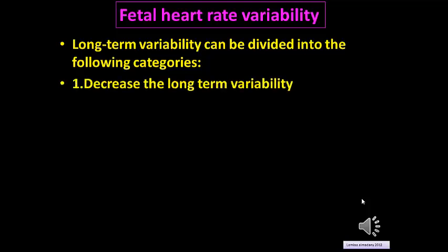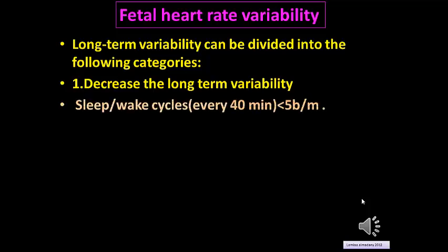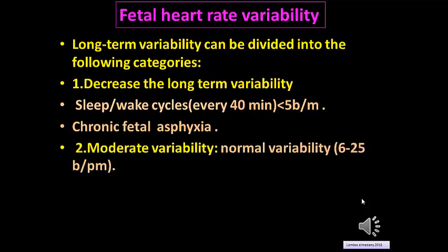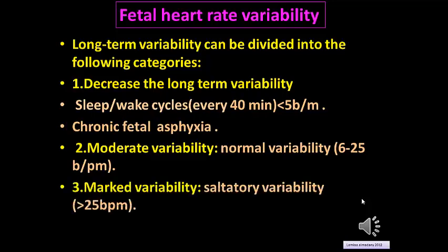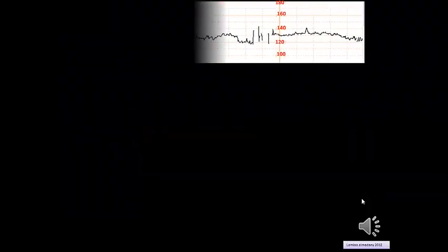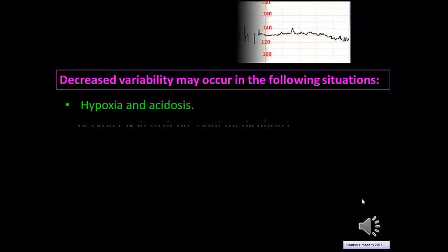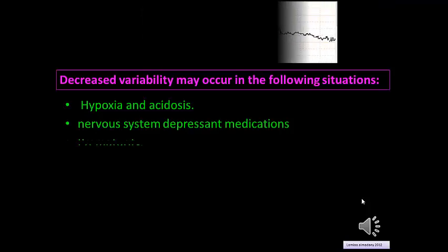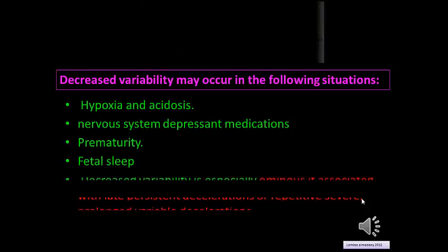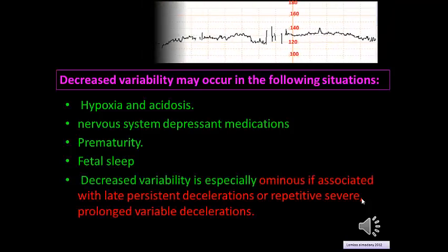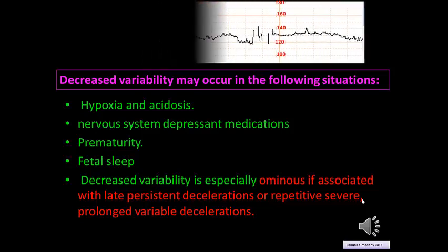Long-term variability categories include decreased variability, which can be due to benign causes like the sleep-wake cycle lasting 40 minutes, or chronic fetal hypoxia as a pathological cause. Moderate variability is normal at 6 to 25 beats per minute, and marked or saltatory variability is more than 25 beats per minute. Decreased variability may occur with hypoxia and acidosis, nervous system depression from medication, prematurity, or fetal sleep. It is especially ominous when associated with late persistent decelerations or repeated severe prolonged variable decelerations.